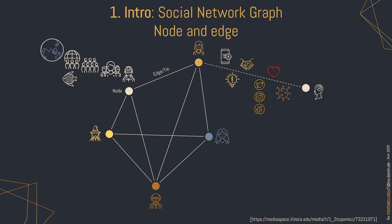A value to measure the connectivity of a node is its degree, which is the sum of the edges connected to the node. So for this node, for example, the degree is 3, and for this one it is 4.